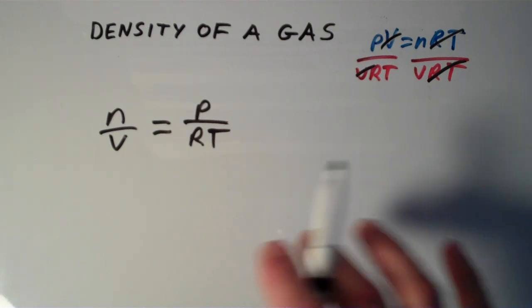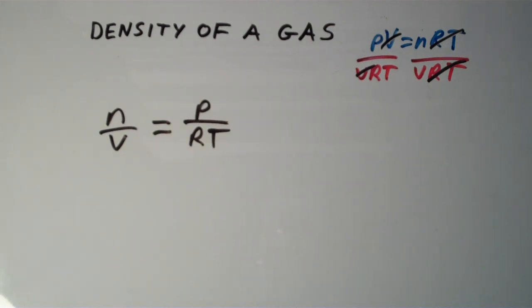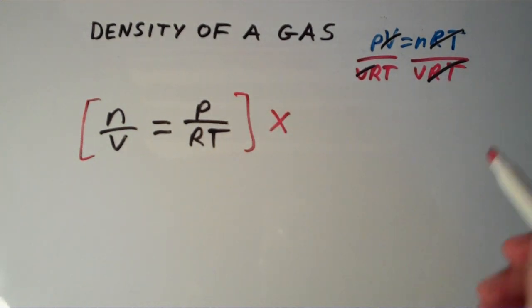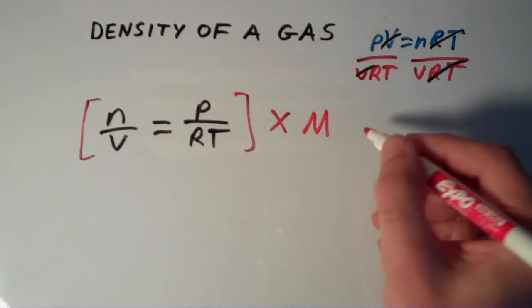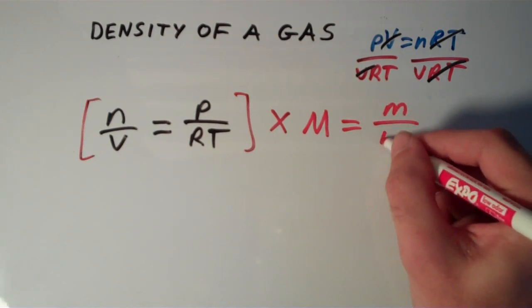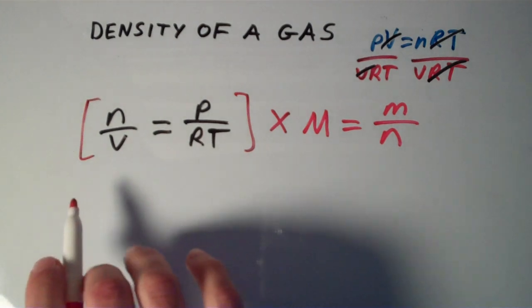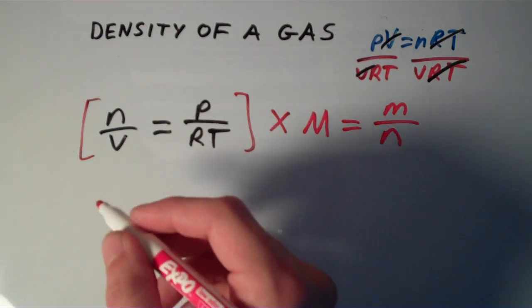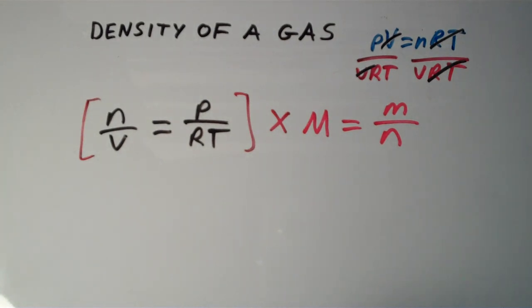This is just rearranging the ideal gas law equation, the same equation shown a slightly different way. Now what I'm going to do is multiply both sides of the equation by the molar mass, which is capital M, which is also equal to the mass over the amount in moles n. So I'm going to multiply both sides of the equation by M over n.